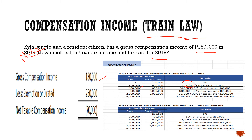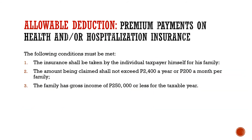Kapag if ever naman na yung gross compensation ni Kyla is for the year 2023, ito na yung tax table na mag-apply doon sa kanyang tax computation. Na-mention natin kanina na under allowable deduction, papasok doon yung personal exemption. Additional sa personal exemption, meron din tayong additional item na pwede pang ipasok sa allowable deduction — pwede pa itong i-minus sa gross compensation income para ang labas ay mas mababa yung magiging taxable income niya.